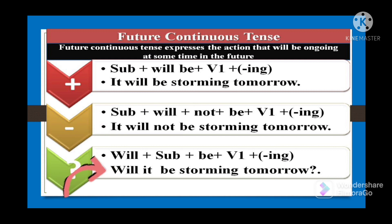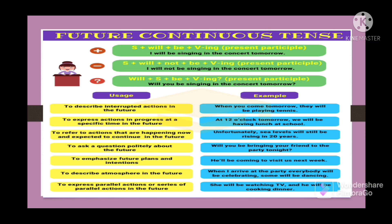Now let us see when to use future continuous tense. Future continuous tense is used to describe interrupted actions in the future. Like if you take example: When you come tomorrow, they will be playing tennis. That is interrupted action in the future. Next, to express actions in progress at a specific time in the future. That means at particular time what action will be taking place. Like if you take example: At 12 o'clock tomorrow we will be having lunch at school. That means it will be happening there at that specific time.